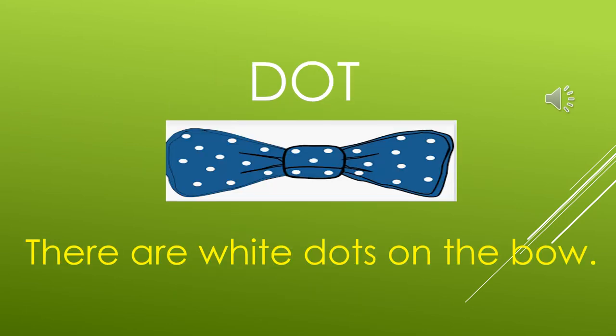Next one is dot. At the end of a sentence you also use a dot to complete the sentence, which is called a full stop. And can you see on the bow? There are white, white dots.